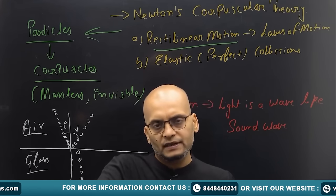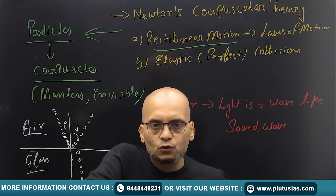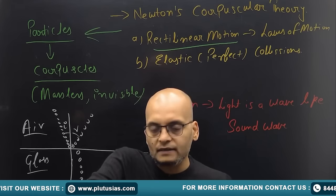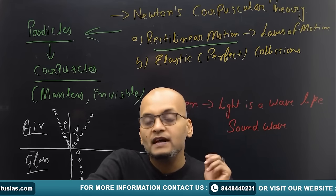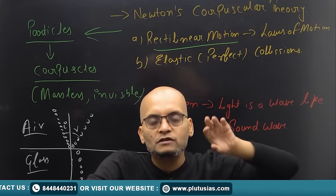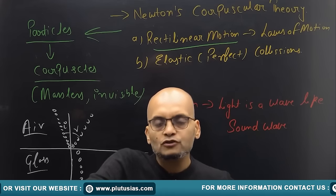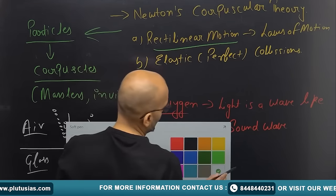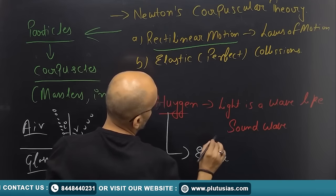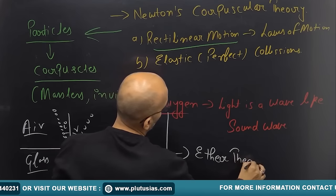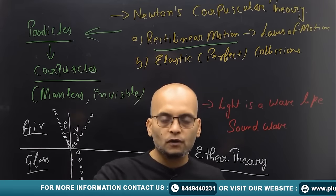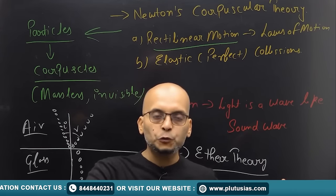There were also serious problems with Huygens' theory. If light is just like a sound wave, a very obvious question arose: it was known even then that the space between the sun and earth is a vacuum, and sound waves require a medium to travel. So how does light reach from the sun to earth through vacuum? To address this, Huygens took refuge in the ether theory.